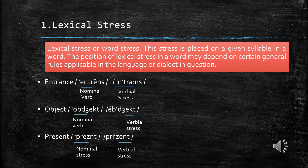Lexical stress, or word stress, is the stress placed on a given syllable in a word. The position of lexical stress in a word may depend on certain general rules. For example: 'entrance' (noun) vs. 'entrance' (verb); 'object' (noun) vs. 'object' (verb); 'present' (noun/adjective) vs. 'present' (verb).